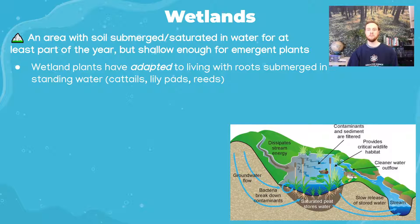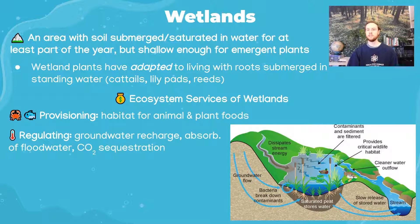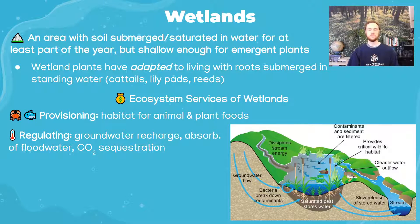Why are wetlands so important? They offer a huge host of ecosystem services. Provisioning services include creating habitats for animals and plants we use as food or raw materials. Regulating services include groundwater recharge — wetlands slowly allow water to seep into the soil, which is filtered by plant roots that trap pollutants. They also sequester carbon dioxide, with woody plants storing CO2 in bark and other structures, helping to mitigate climate change.